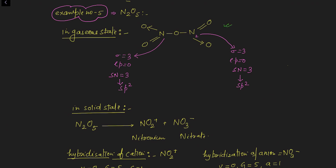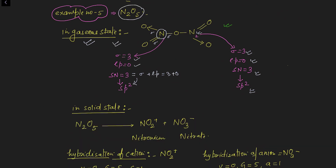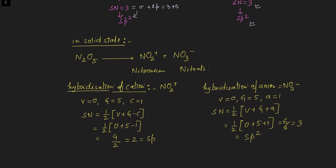Example five: N2O5 in gaseous state. In this molecule, each nitrogen is surrounded by three sigma bonds and zero lone pairs. Steric number = sigma bonds + lone pairs = 3 + 0 = 3. Therefore hybridization of each nitrogen in N2O5 in gaseous state is sp2.